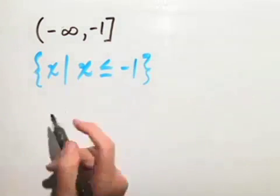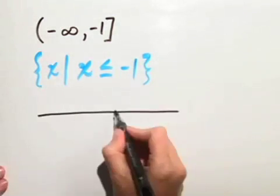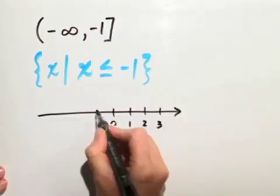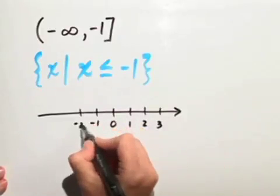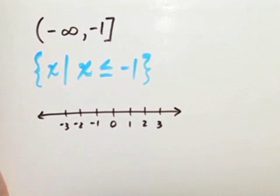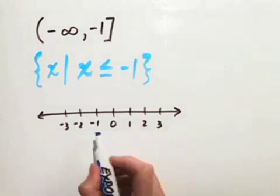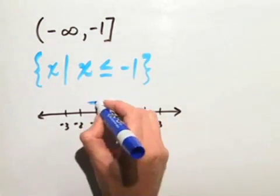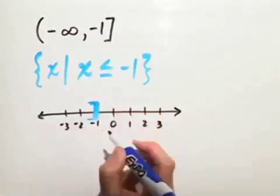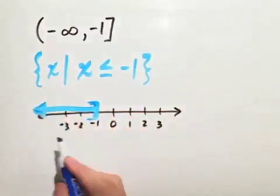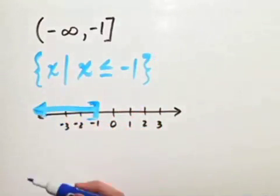Let's look at our number line. Remember, we want numbers x that are less than or equal to negative 1. Because we have a less than or equal to sign, we use a bracket and an arrow to indicate we want to go on infinitely in the negative direction.